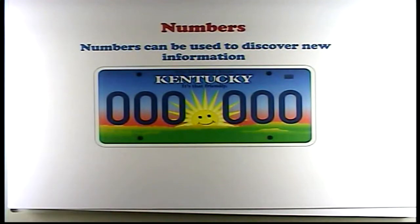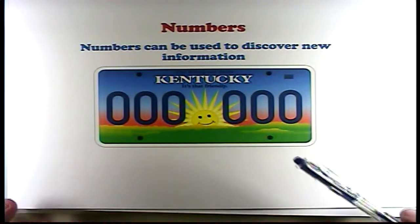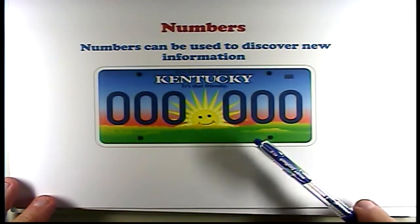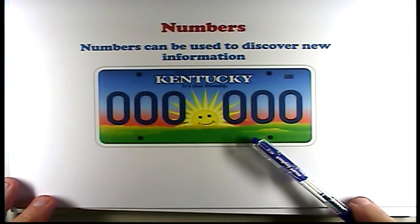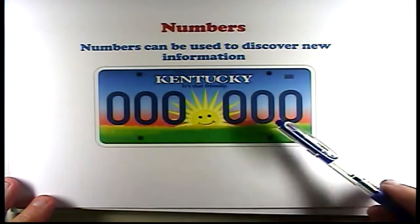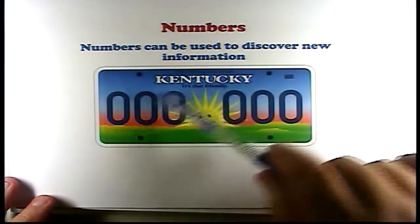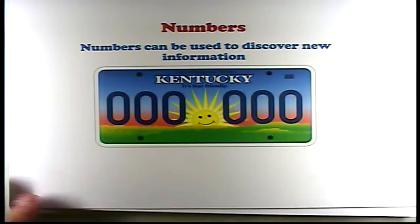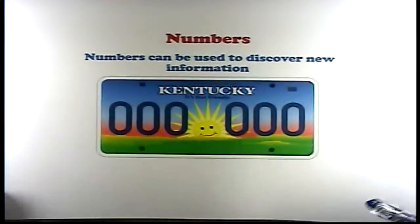So, numbers can also be used to discover new information. For instance, here's a picture of a license plate. This number sequence on this license plate can be used to identify a specific car. So, that way, if a policeman's looking at a car, if someone's looking at a car, we know whose car that is by using these numbers. So, numbers are also used for identification.